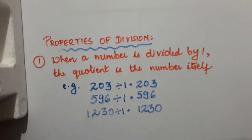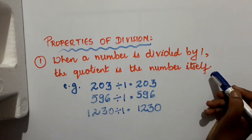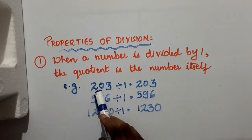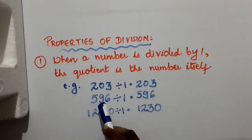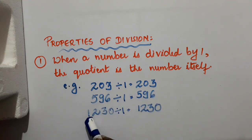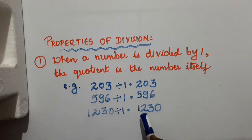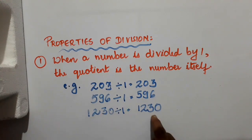Let us recall the properties of division. When a number is divided by 1, the quotient is the number itself. For example, 203 divided by 1 equals 203; 596 divided by 1 is 596; 1230 divided by 1 equals 1230. It means when a number is divided by 1, you get the number itself.